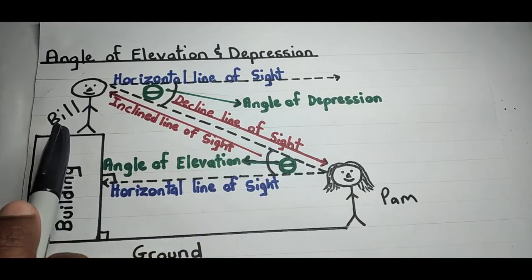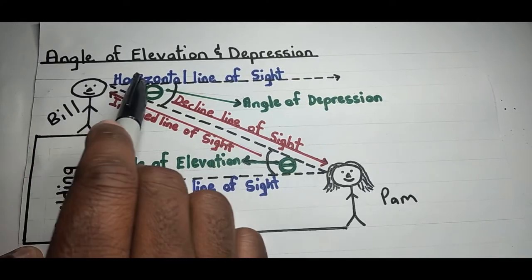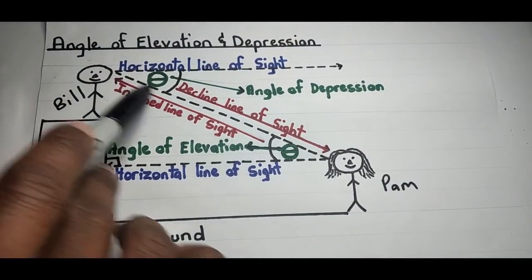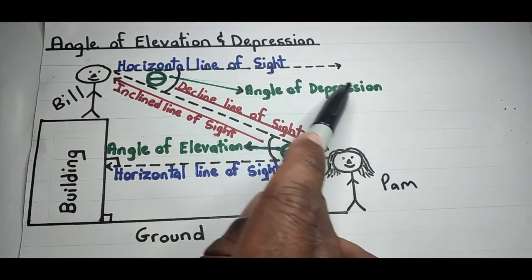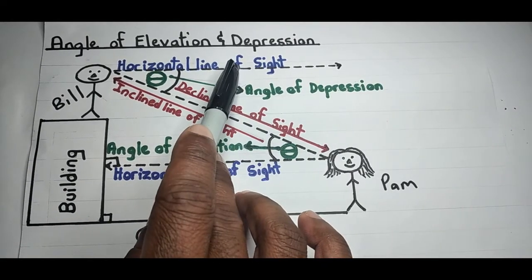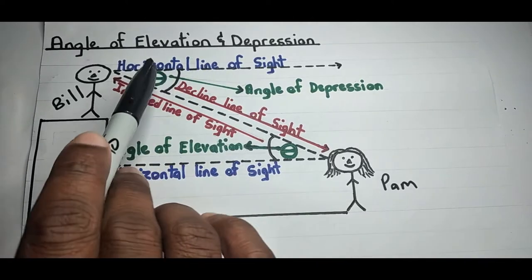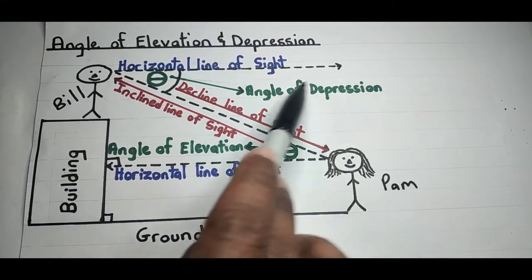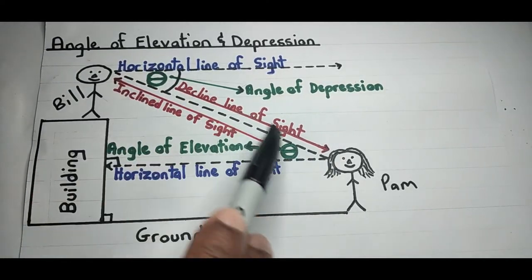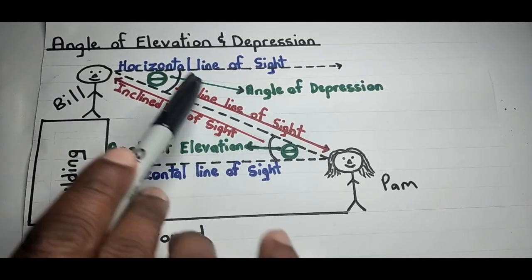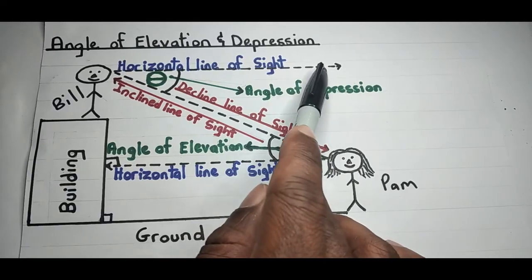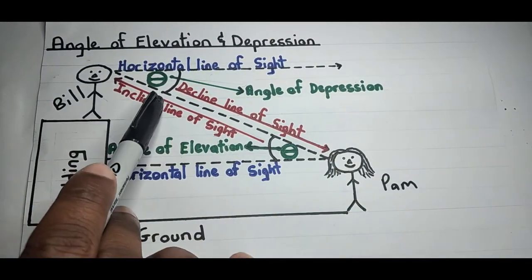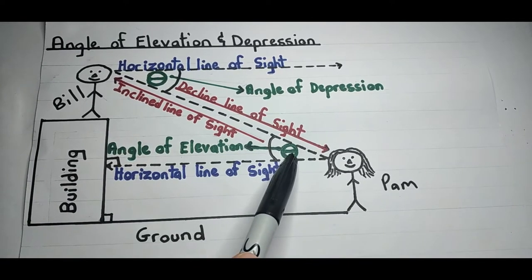The angle of depression is the angle formed when Bill is looking horizontally straight across versus when he's looking at Pam on the ground. The angle of elevation and angle of depression are congruent — equal to each other — according to the concept of alternating angles, also called Z-angles. Notice the diagram forms a Z shape, confirming these angles are equal.